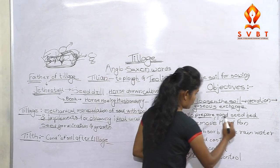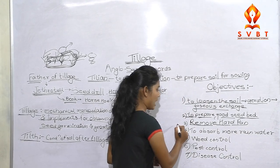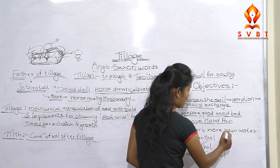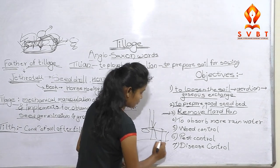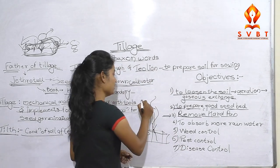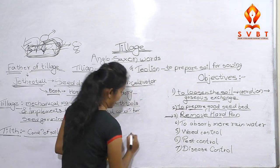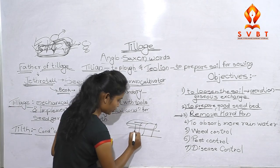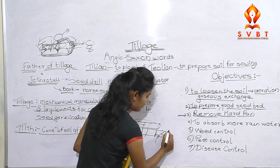If there is a hardpan in the seedbed, we will remove the hardpan. Rainwater is very important for the growth of the crop. It is important to incorporate crop residues. In this season, we will harvest the crop and remove the crop from the harvest. There are also some weeds, so the stubbles are removed and the weeds are removed.